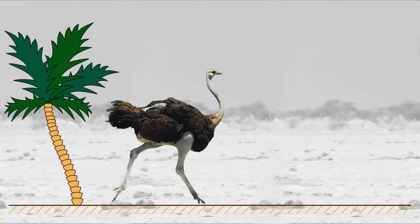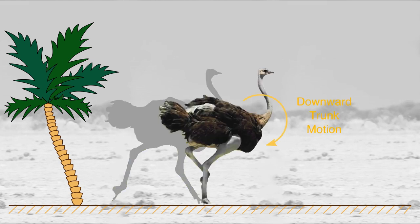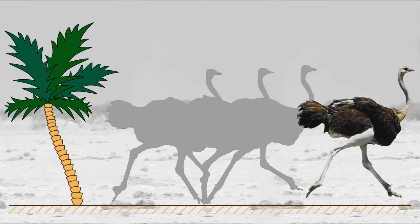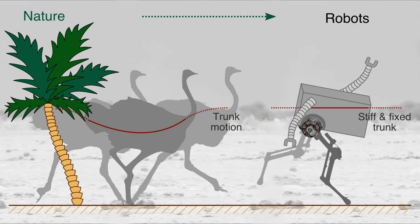An example can be seen in avian running, where the trunk moves downward during the stance phase and upward at other times. On the other hand, most legged robots discard trunk movements as a means to enhance their locomotion capabilities.